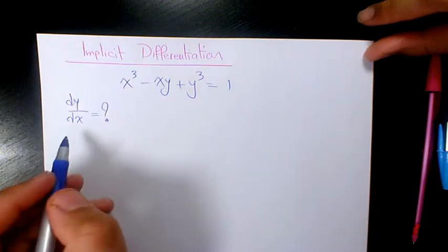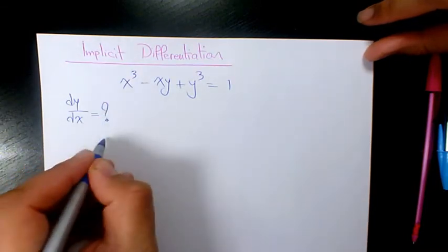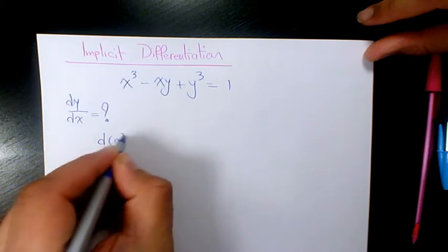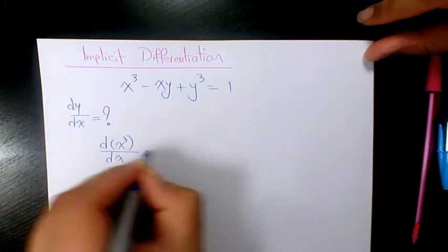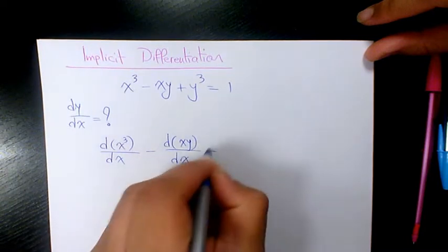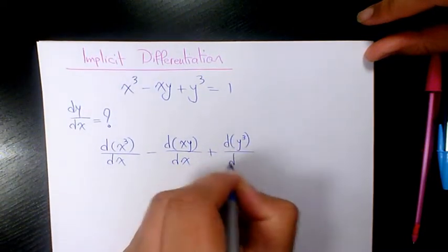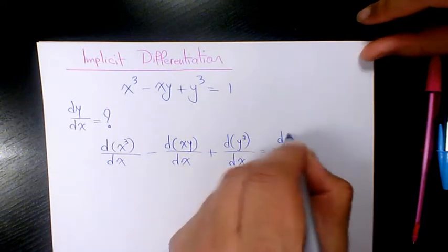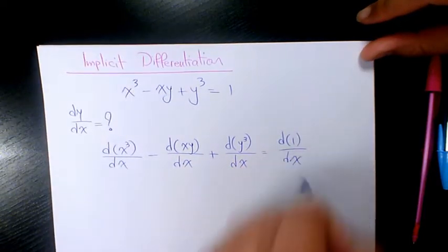So I need to use implicit differentiation. So derivative of x³ with respect to x, minus derivative of xy with respect to x, plus the derivative of y³ with respect to x, equals to derivative of 1 with respect to x.